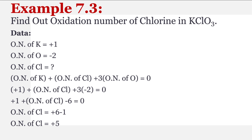Ab oxidation number of potassium ki value put karenge — plus one hai. Oxidation number of oxygen jo hai woh minus two hai — toh woh bhi values wahan pe rakh dein. Simply calculate kiya. Oxidation number of chlorine is equal to plus five — woh humne find out kar li.